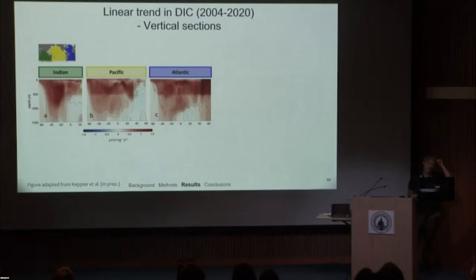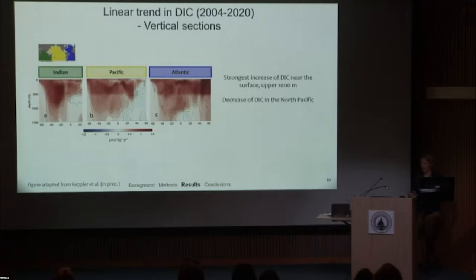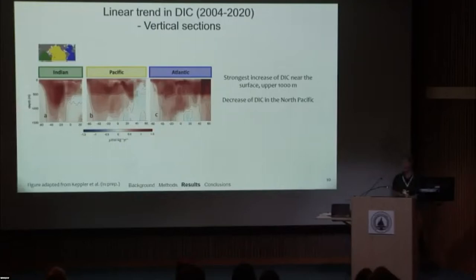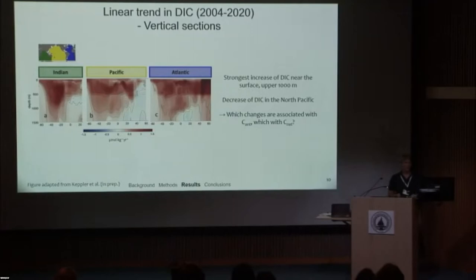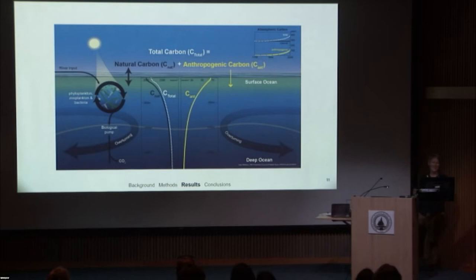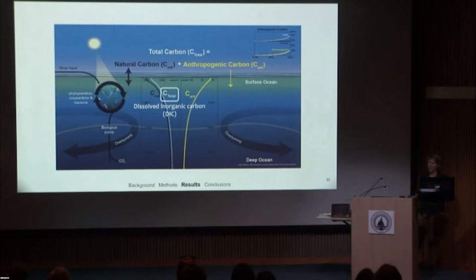Looking at vertical sections for the Indian, Pacific, and Atlantic sectors — latitude on the X-axis, depth on the Y-axis — we see similar patterns: strongest DIC increase near the surface in the upper ~1,000 m, the North Atlantic sticking out, and the Southern Ocean much weaker. To determine which changes are anthropogenic versus natural: the top row shows the trend in DIC during our period, and the bottom row shows the change in anthropogenic carbon. To first order, they look very similar — the change in DIC is very approximately the same as the change in anthropogenic carbon — from which we can deduce that the natural carbon is not changing much, especially within our uncertainties.